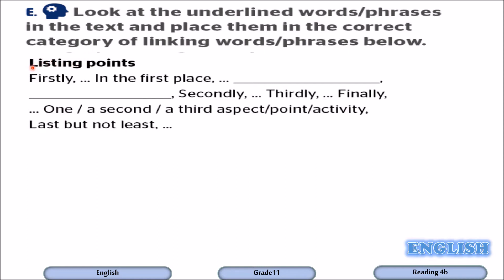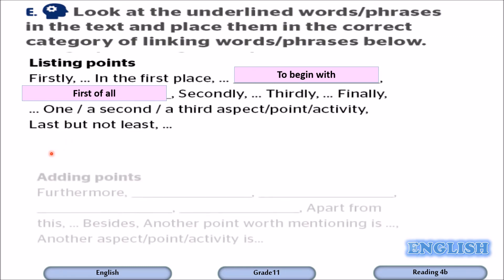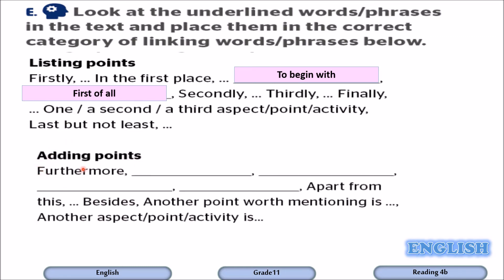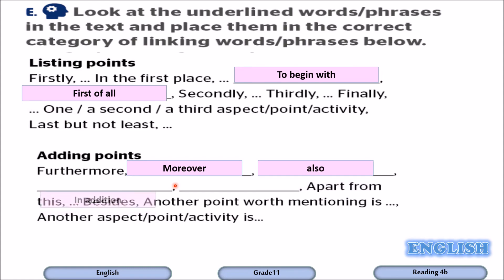Let's start with the first function: listing points. We have firstly, in the first place, to begin with, and first of all — their function is to list points. Moving to the second one: adding points. The writer uses moreover, also, and in addition.